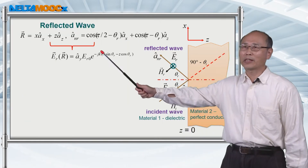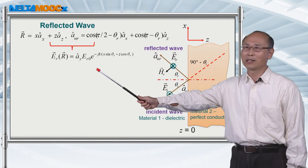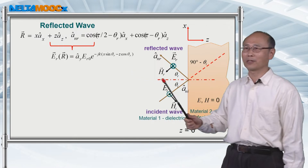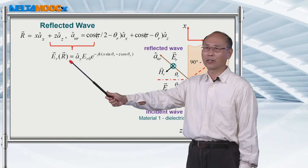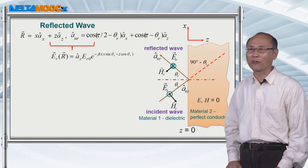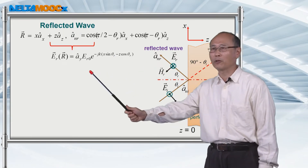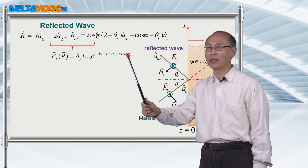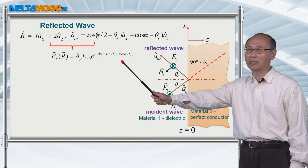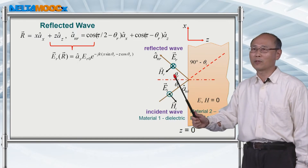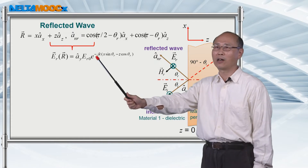You can also write down the field expression for the reflected wave by following the same steps. The reflected wave is also polarized along the y direction, because the configuration introduces no reason to change the polarization of the electric field, which remains transverse to the plane of incidence. From this expression, the reflected wave has a component propagating in the backward z direction, and a component along the plus x direction, which is why you see a minus sign in the term minus j k x sin θ_r.